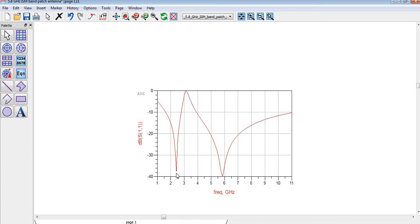This is our dual band antenna. It's resonated at 2.4 gigahertz and 5.8 gigahertz. I am showing you how you will draw this window.